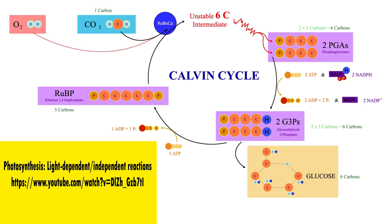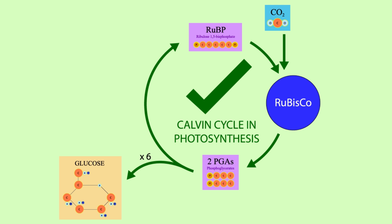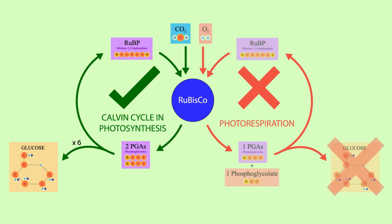As mentioned in this video, rubisco sometimes binds oxygen instead of carbon dioxide. This wasteful alternative pathway is called photorespiration. In the Calvin cycle, CO2 is combined with RuBP to form two PGAs. Upon the completion of six rounds of this cycle, one glucose molecule can be produced. Sometimes, however, rubisco picks up oxygen instead. This results in photorespiration — the oxygen is combined with RuBP and creates only one PGA, as well as phosphoglycolate, a two-carbon molecule that is toxic to plants.